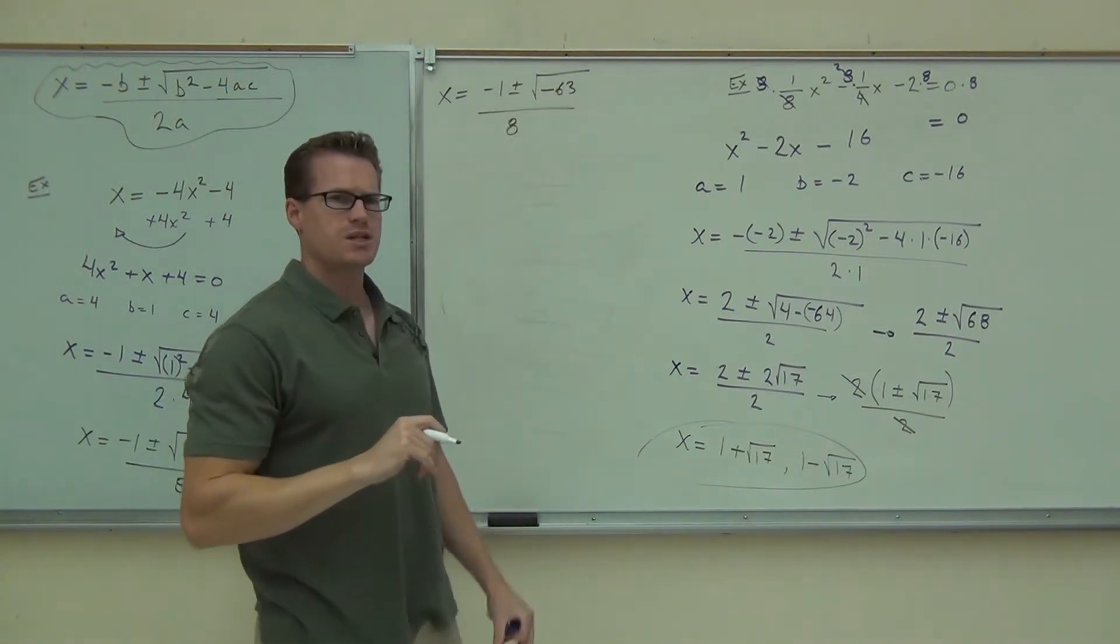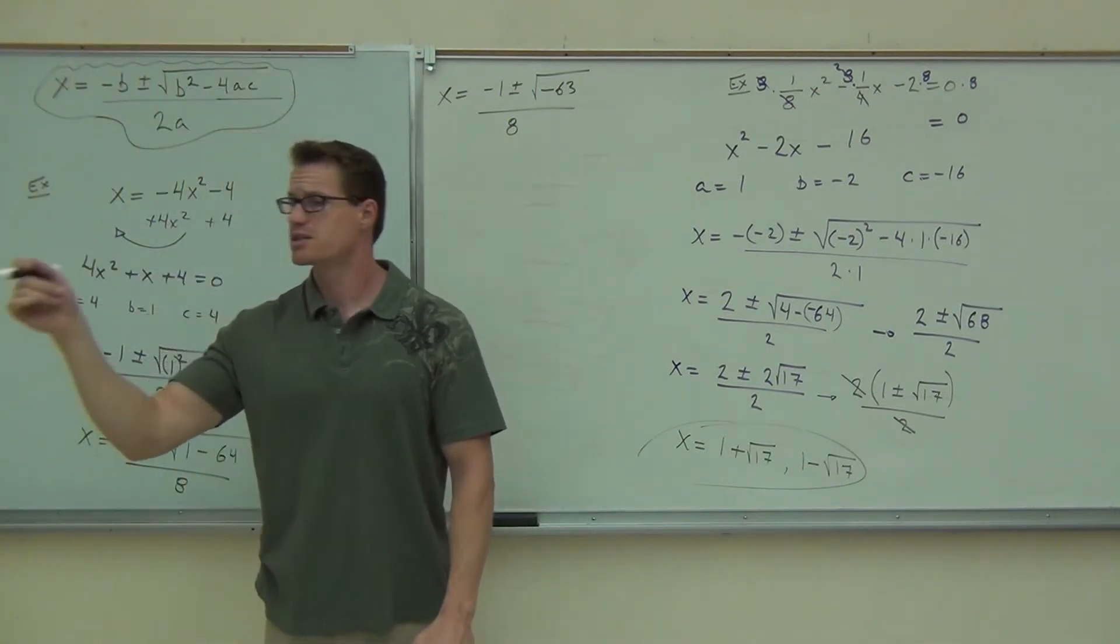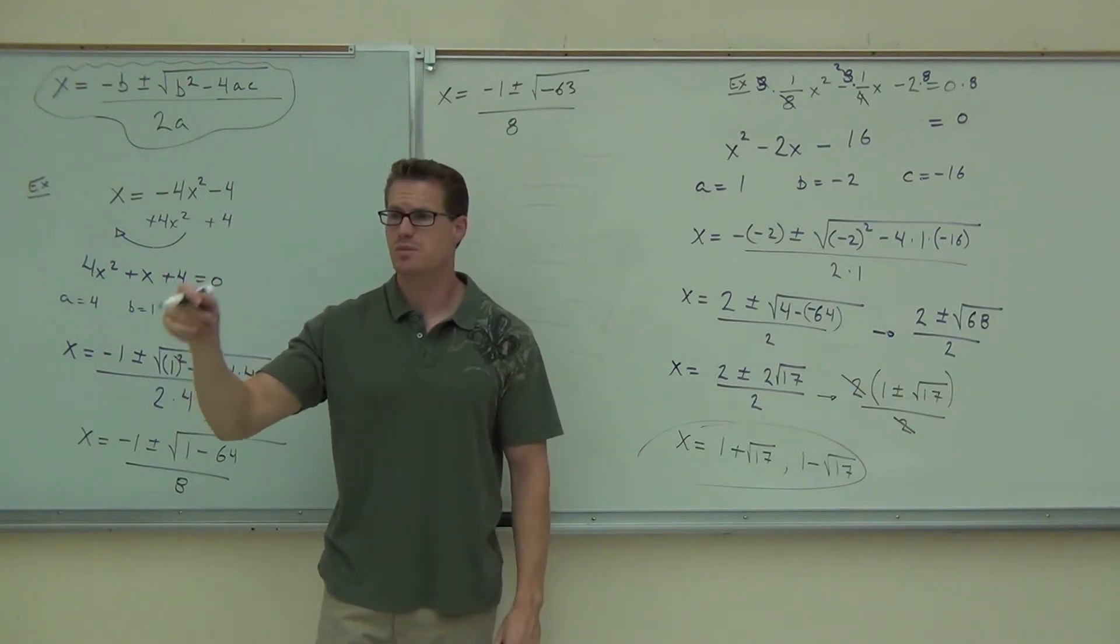Now, the square root of negative 63 is something we should have focused on with our i's. You know the negative gives you an i. 63 is 9 times 7. That's going to be 3i root 7.